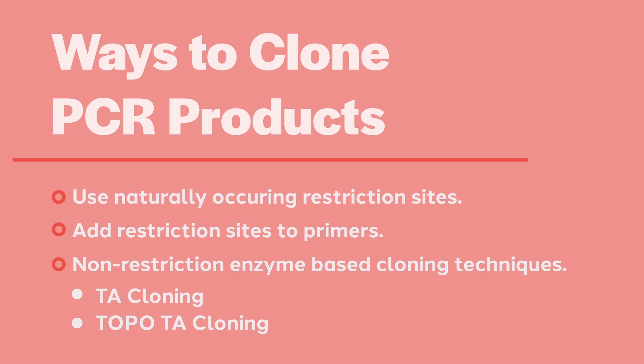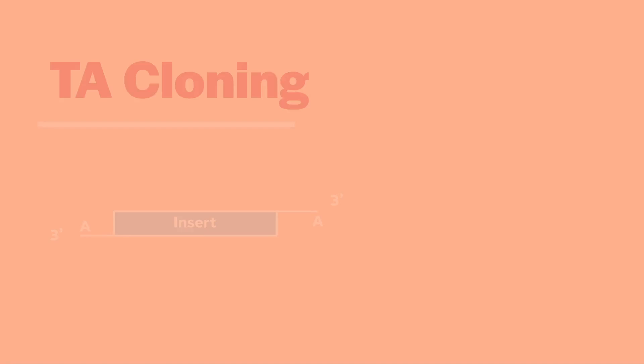As it turns out, standard TAC polymerase frequently leaves an extra untemplated A at the 3' end of the PCR product. A category of cloning vectors have been developed to take advantage of this untemplated A.